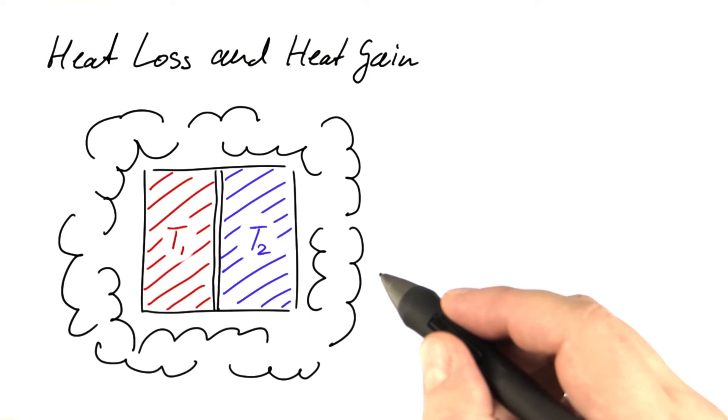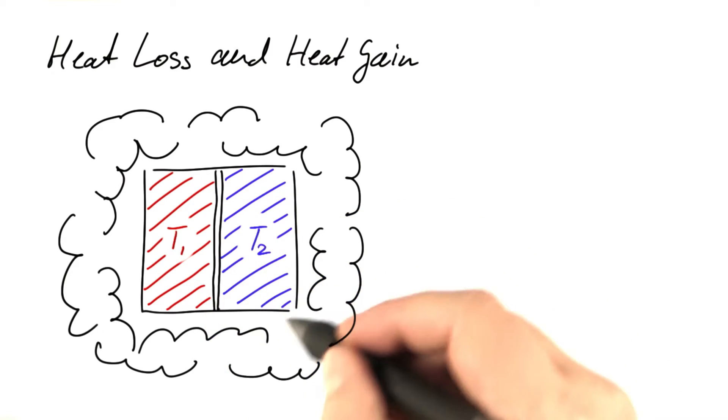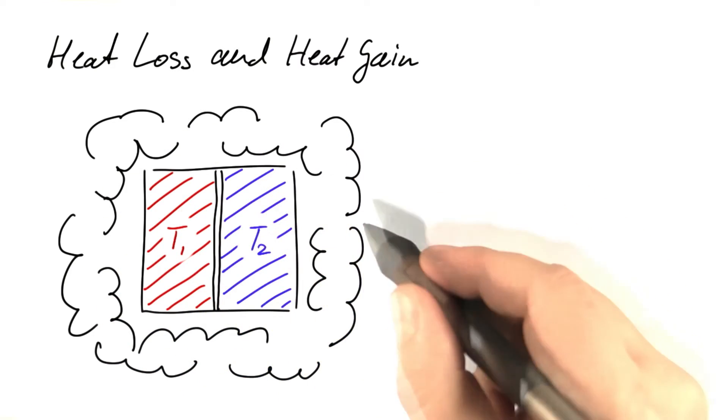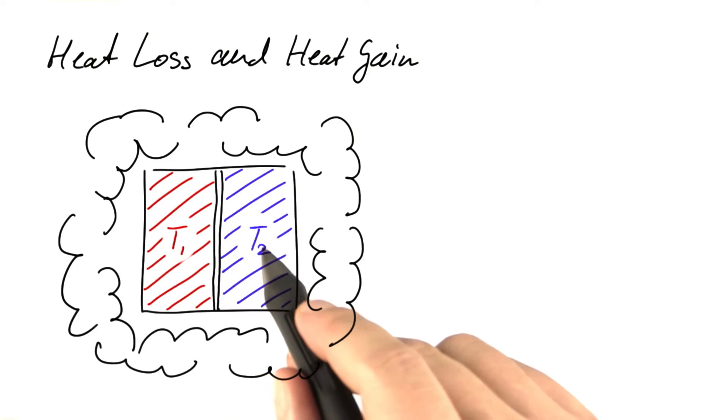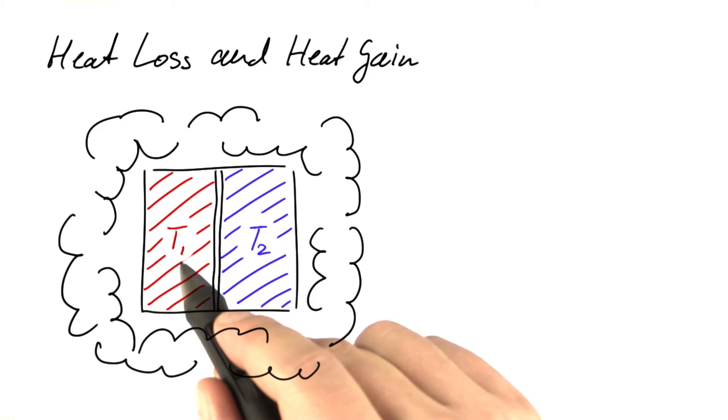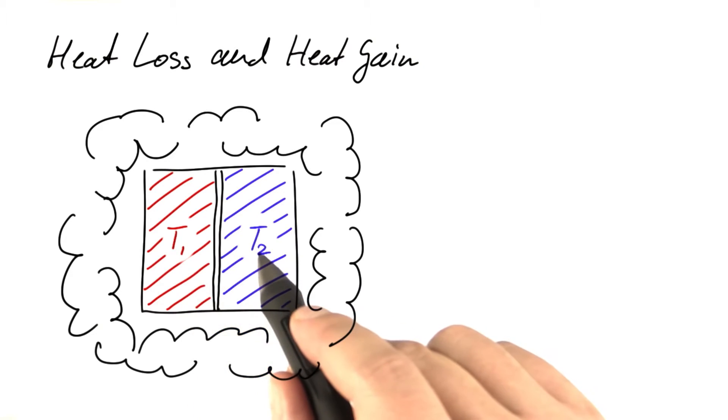To get started, let's look at this system. It's a tank that's completely isolated from its environment and contains two different compartments. One is filled with water that's initially hot and another compartment is filled with water that's initially cool.